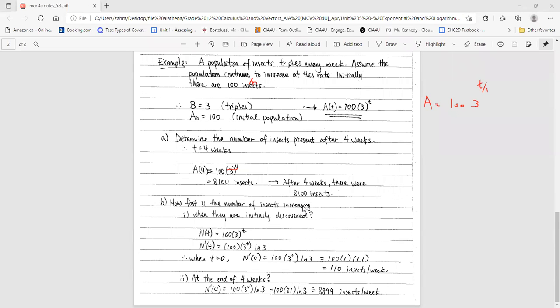How fast is the number of insects growing? You just need to take a derivative of that. How fast means instantaneous rate of change. So again, 3 to the power t - the derivative of that is itself multiplied by the ln of the base. Initially means when the time is zero. Instead of t we put zero.